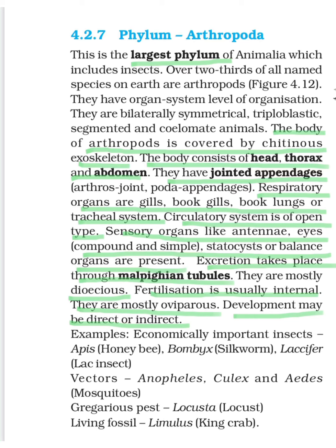For the respiratory system, various organs are observed for the first time. If they are aquatic in habitat, they have gills or book gills; others have book lungs or a tracheal system. They are actually omnipresent — found in every type of medium: water, air, on land, in soil, and as a parasite.